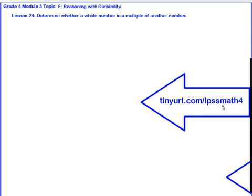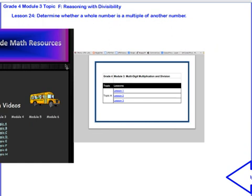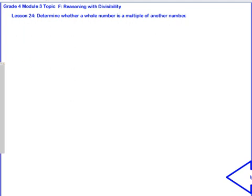If you want to get a collection of all of the videos for fourth grade, you can go to tinyurl.com slash LPSS Math 4, the number 4. And if you do that, you'll get to my OnCourse website and it has the modules and you can click the topic that you're on and you'll get a little PDF of the lessons. And then you can click the lesson and it'll take you to the YouTube video. You can also download these PDFs and put them on your desktop or email them to parents.